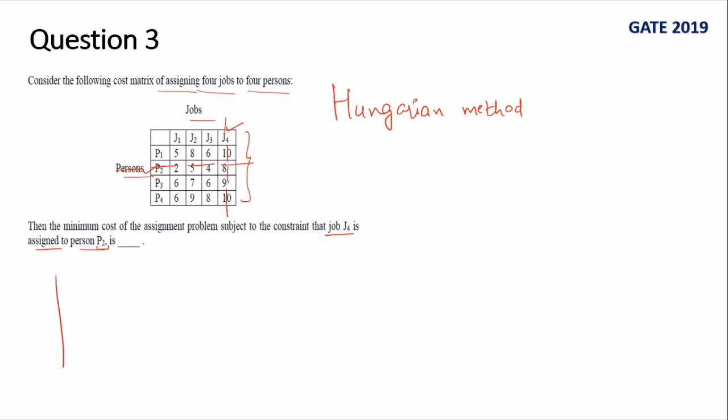Then we will be left with our reduced size matrix which is 3 by 3. If you rewrite the matrix, you see that this is 5, 8, 6, 6, 7, 6, 6, 9, and 8.